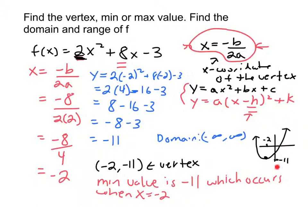So range would be all the values that y takes on. Now y goes all the way down to negative 11, but it never gets any lower than negative 11. So negative 11 is its lowest value that y can take.